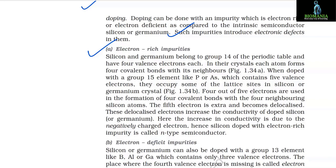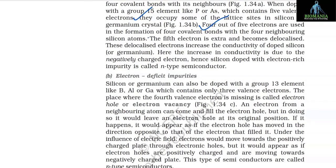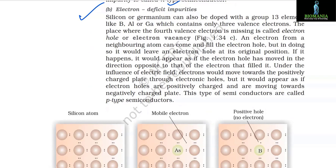(a) Electron-rich impurities — silicon and germanium belong to Group 14 and have four valence electrons. When doped with a Group 15 element like phosphorus or arsenic (five valence electrons), four electrons form covalent bonds with neighboring silicon atoms. The fifth electron is extra and becomes delocalized, increasing conductivity. Since conductivity is due to negatively charged electrons, silicon doped with electron-rich impurity is called an n-type semiconductor.